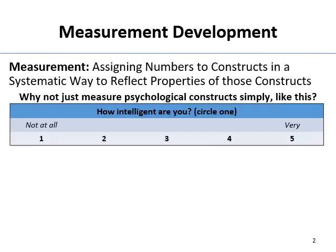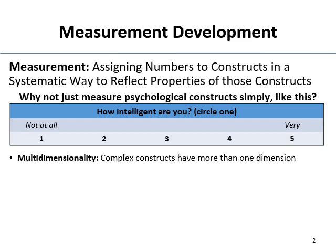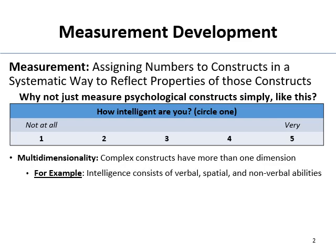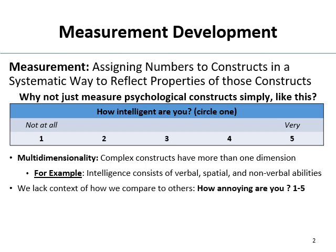So why don't we just measure things with a single item — like a 1-to-5 Likert scale asking 'how intelligent are you?' Well, the most important reason is multi-dimensionality. We measure really complex constructs in psychology, and they tend to have more than one dimension. Just asking overall where you fall on a construct might not work. Intelligence, for example, is made up of subscales — verbal, spatial, nonverbal — all multi-dimensions behind the larger construct.